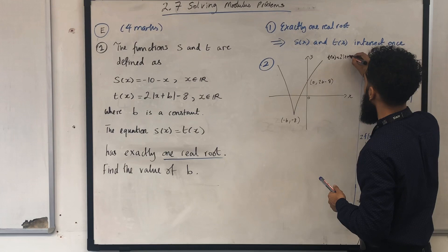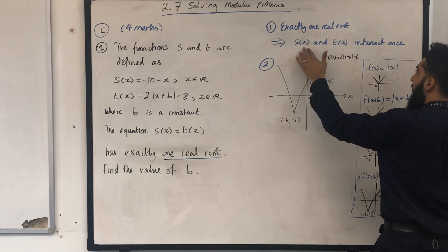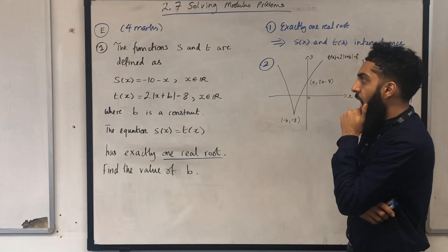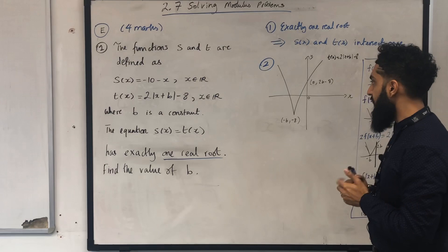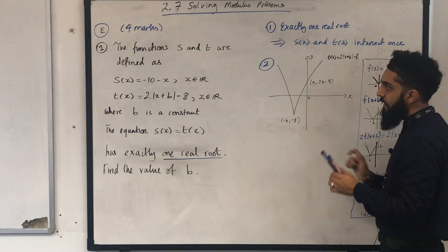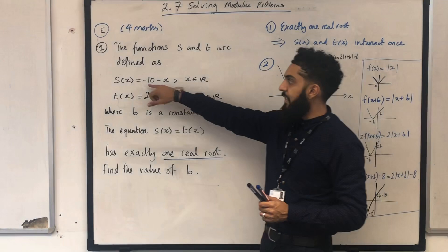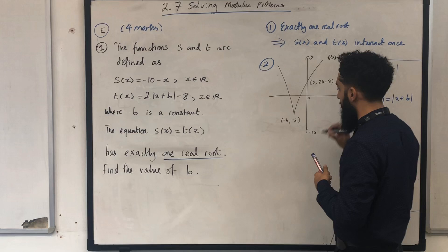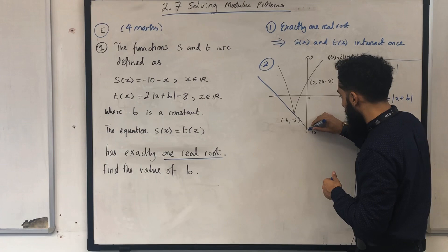Going back to step one: exactly one real root implies s of x and t of x intersect once. I want to draw the graph of s of x on this coordinate grid so that there is one intersection. I notice that the graph must pass through the vertex. Looking at s of x equal minus 10 minus x, the gradient is minus 1 and the y-intercept is minus 10. The line must pass through the vertex of the modulus graph.